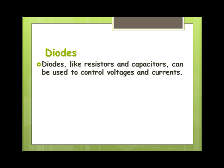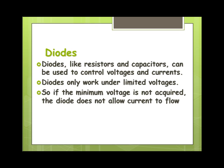What is a diode? Well, a diode is a semiconductor and what it can do is be used to control voltages and currents, a lot like resistors and capacitors are used. It only works under a limited voltage, so if you don't reach this minimum voltage then the diode will not allow any current to flow.